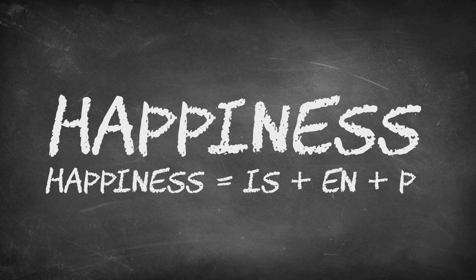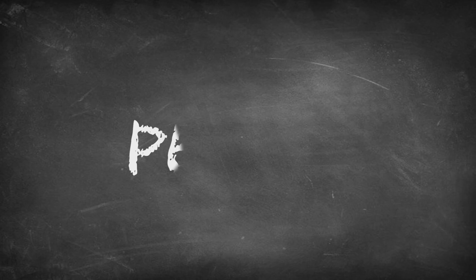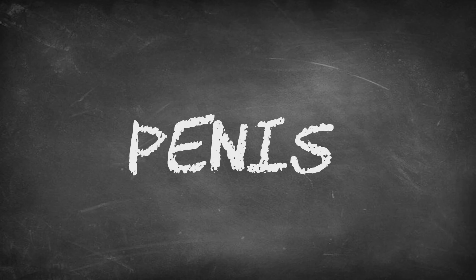Alright, let's continue. So, happiness equals IS plus EN plus P. These are basically the same equation now. Let's add IS plus EN plus P together. Happiness equals P-E-N-I-S. Happiness equals penis. You can't have happiness without penis.